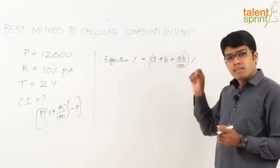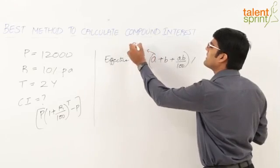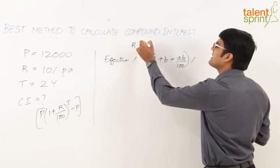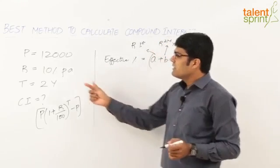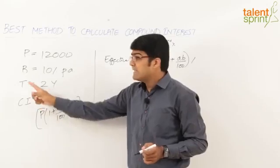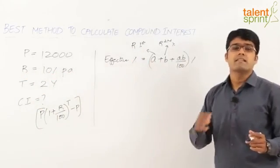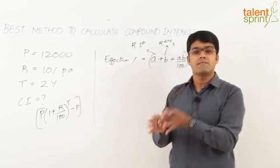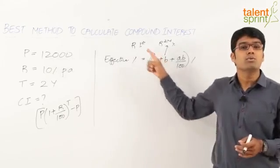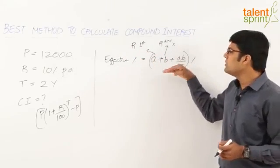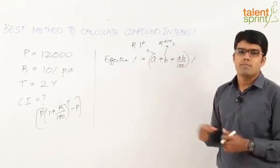Now what are a and b in our case? A denotes the rate of interest for the first year and b denotes the rate of interest for the second year. In the given question, the time period is 2 years and the rate of interest is fixed at 10% per annum — so for year one it is 10% and year two it is also 10%, meaning a and b are both equal to 10%. All we need to do is substitute the values of a and b to get the effective percentage, which equals the compound interest.